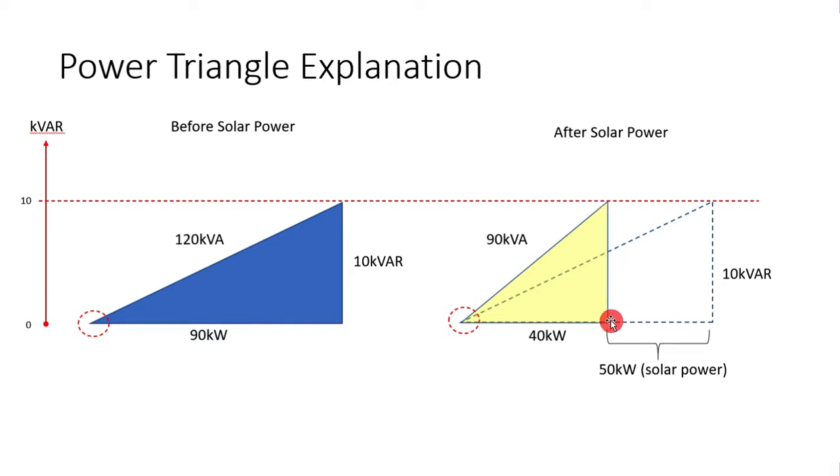Now, why this kVAR remains the same, right? It's still 10kVAR because the solar power is generating 100% kW. So, and then it will push this power triangle back to 40kW.